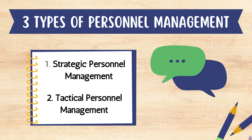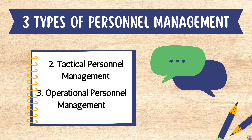Now I will go to the three types of personnel management. Number one is strategic personnel management — it focuses on an organization's current and future staffing needs. Number two is tactical personnel management — it involves developing HR resources and using them to plan staffing processes. Number three is operational personnel management — it focuses on maintaining HR support functions.